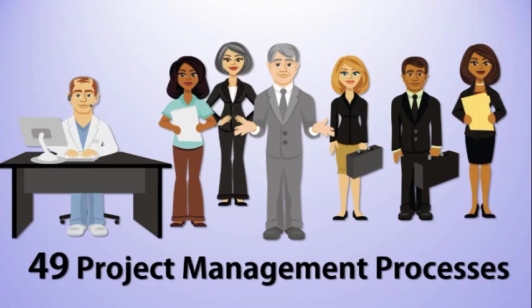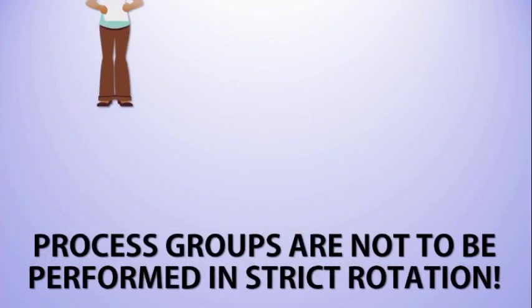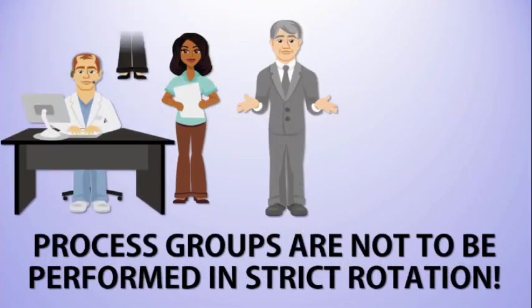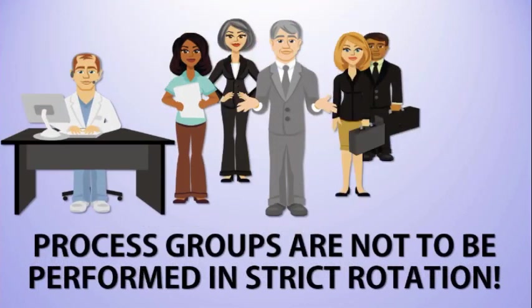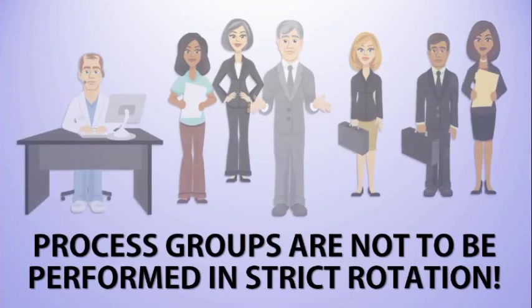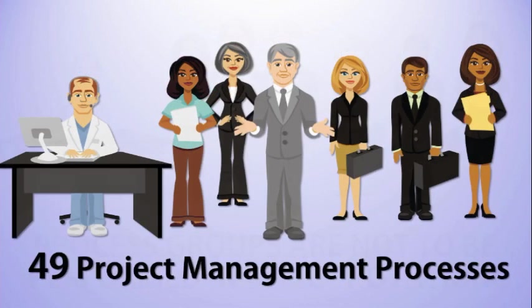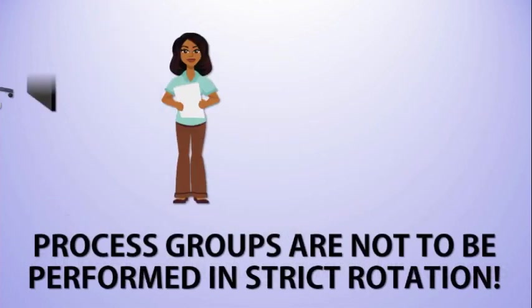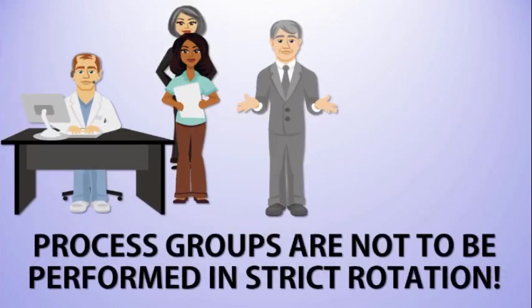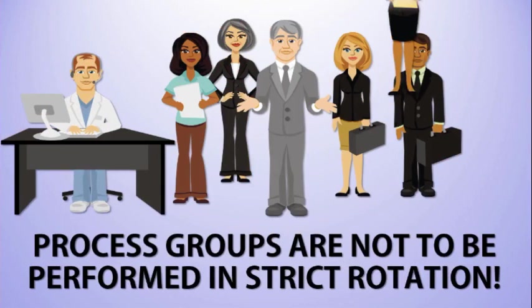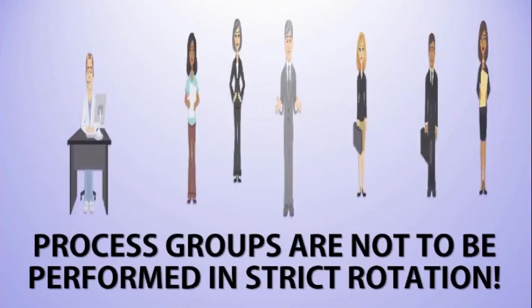There are 49 processes in the PMBOK Guide 6th edition, and they're broken out by process group. These process groups are not meant to be done in linear rotation. Some people read the PMBOK Guide and go through the order of the chapters, thinking project management is meant to be in that fashion — but it's not. Project management is extremely situational, dynamic, and iterative. For that reason, do not think of the processes as being in any strict order.